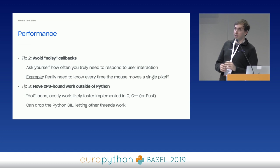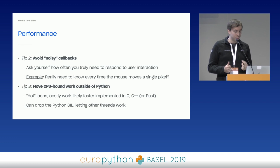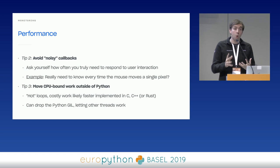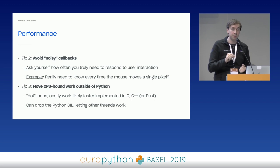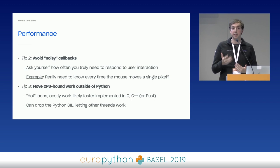Second, try to avoid noisy callbacks. It's tempting to register a lot of callbacks to give the user a lot of feedback, but try to limit this — or better yet, use APIs that don't require noisy callbacks. Ask yourself how often you truly need to respond to user interaction. A sort of extreme example: do you really need to know every time the user moves the mouse by a single pixel? Probably not. If you remove those, your app will tend to be less sluggish.